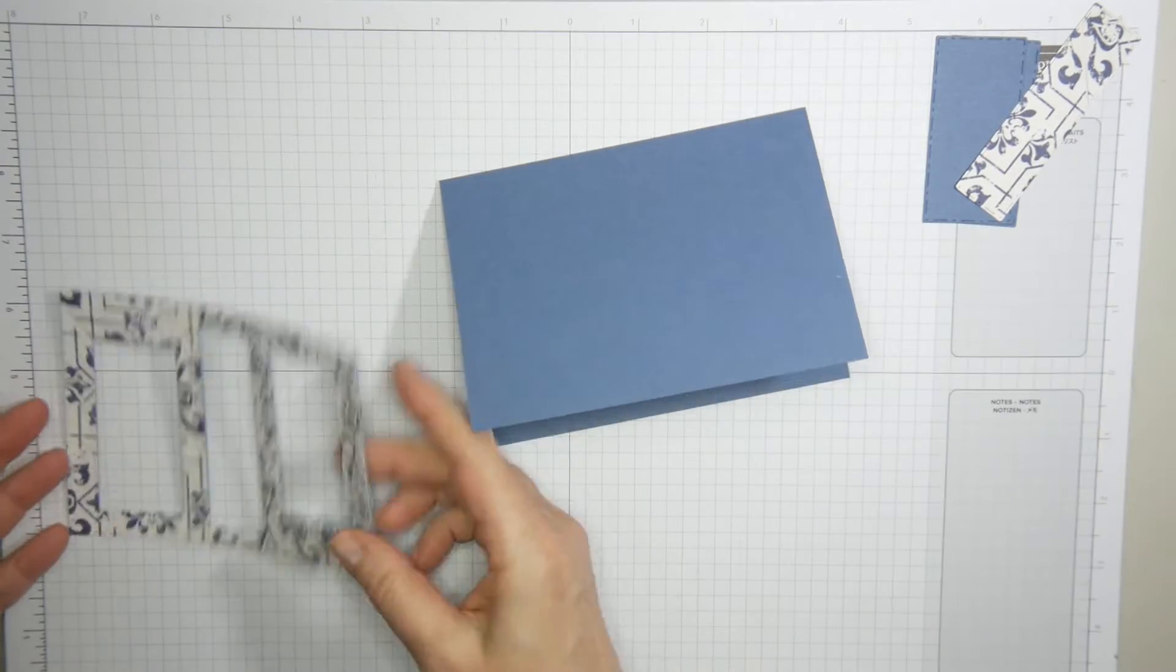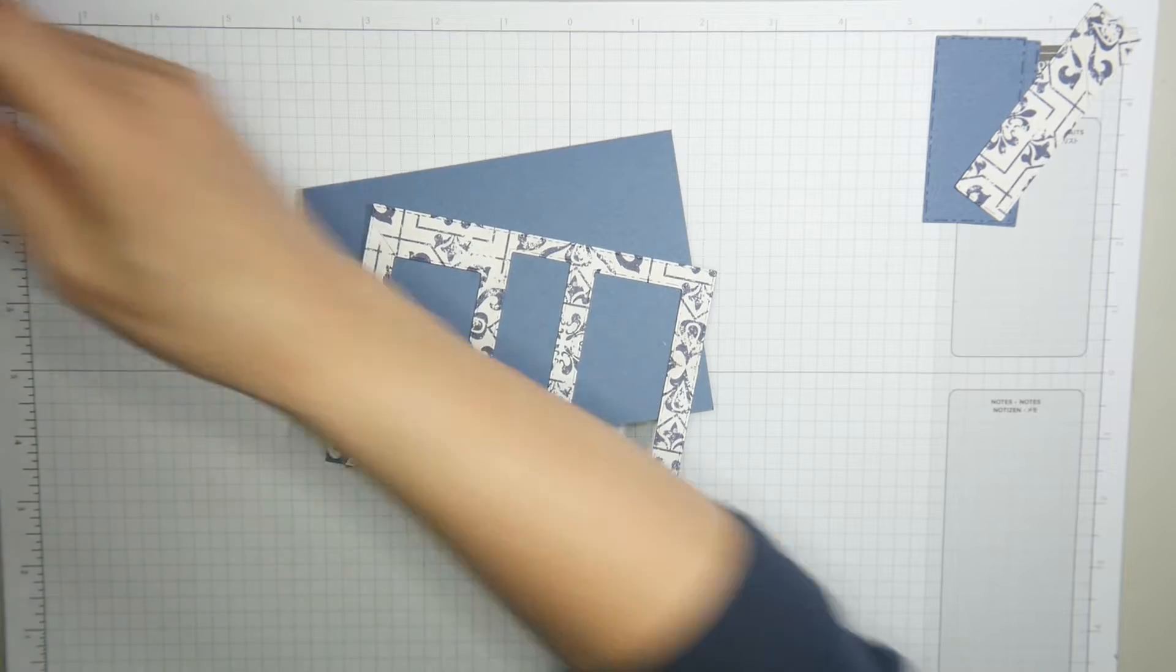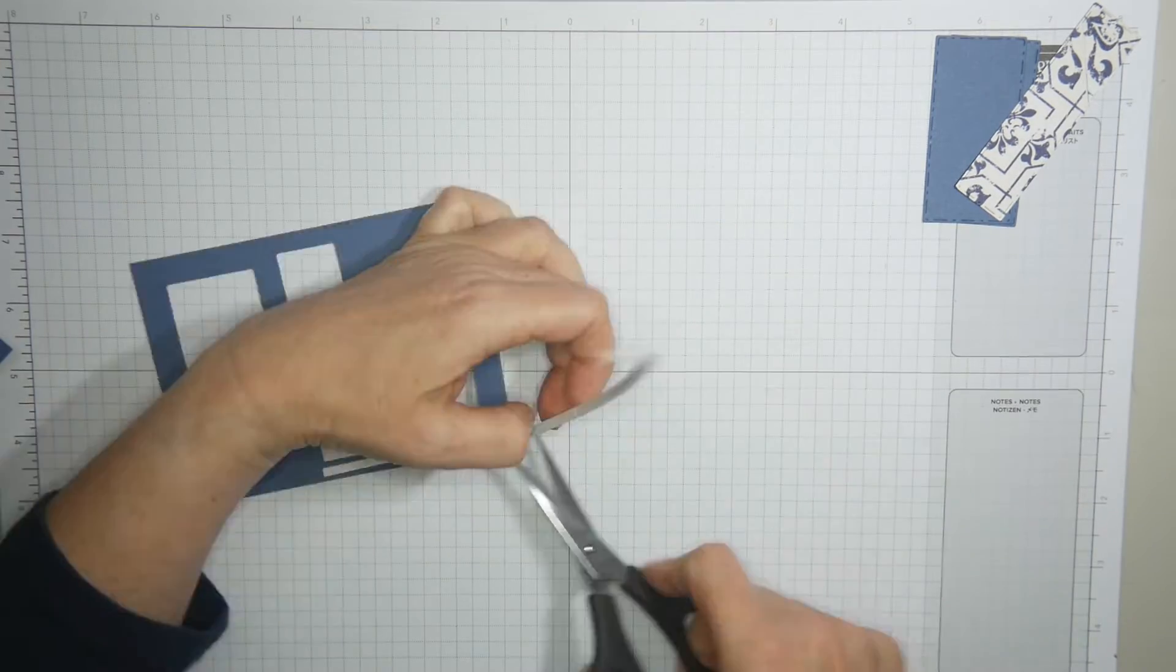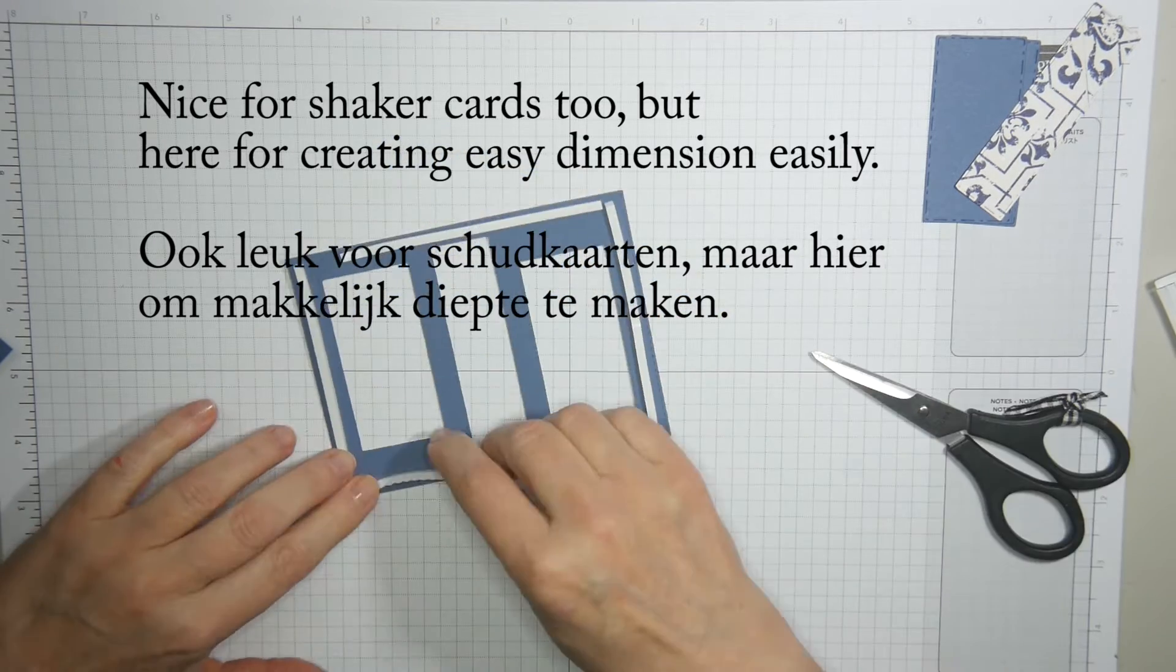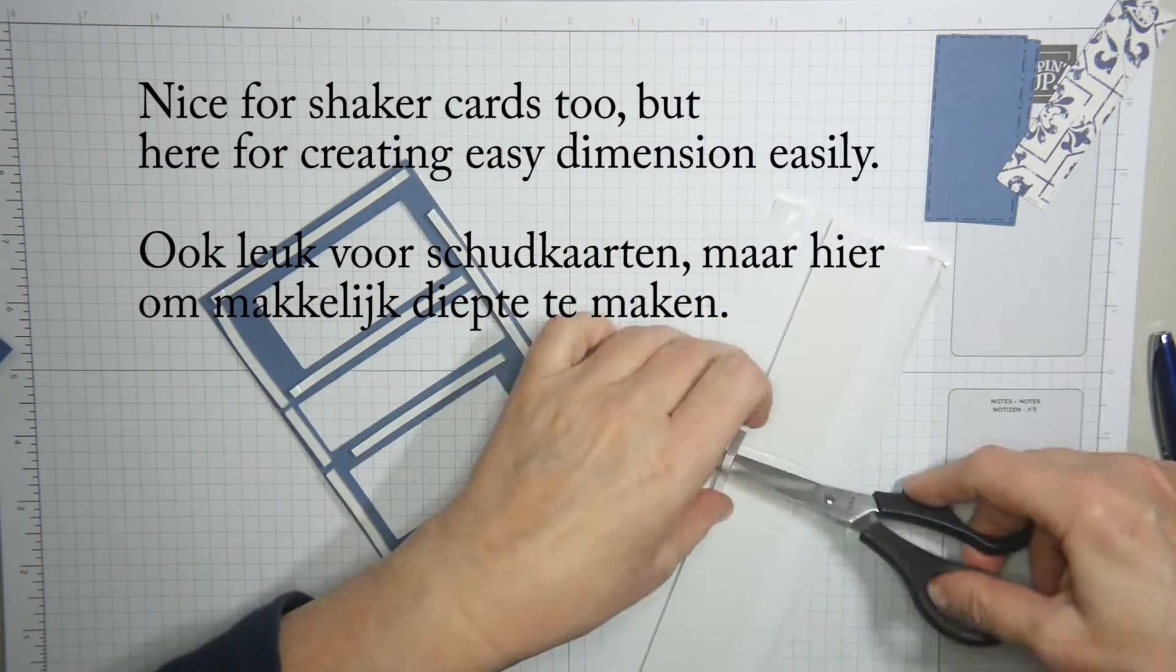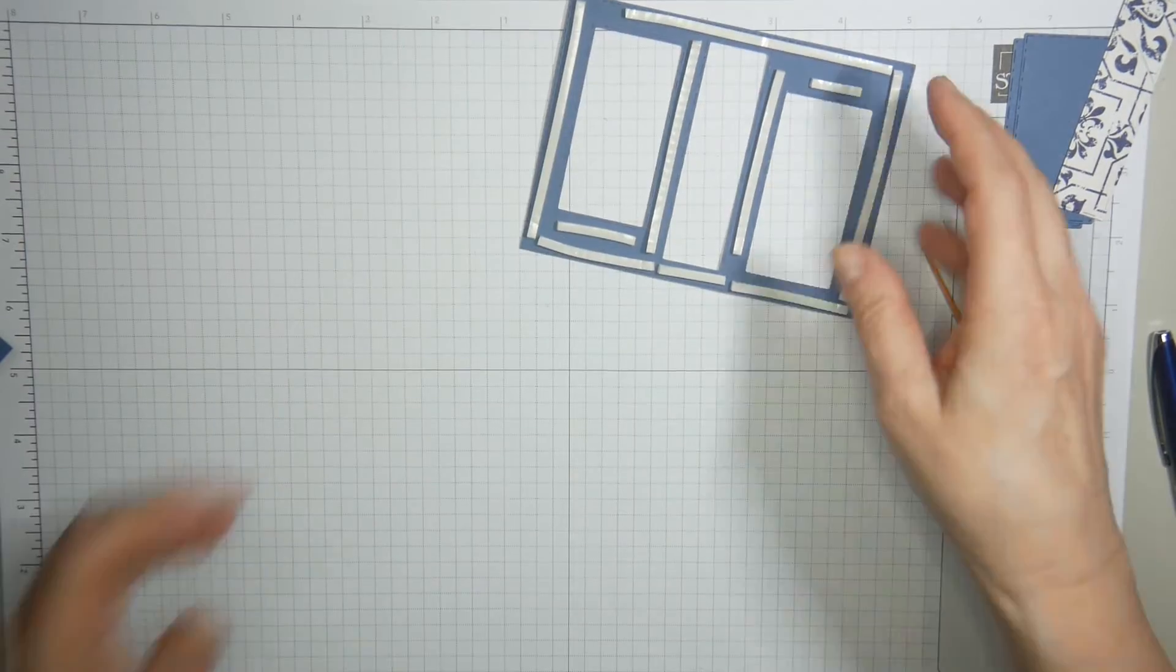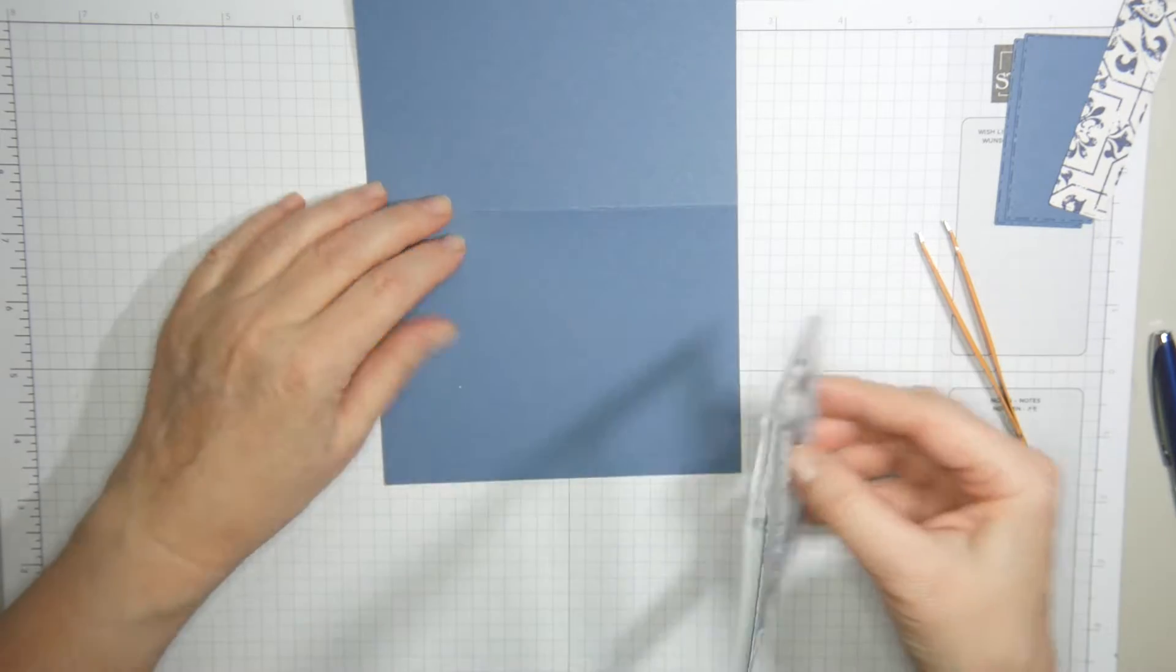Then you want your layering piece to go on top of the base card, and to do that I'm using the adhesive sticks. So let's do that. Oops!